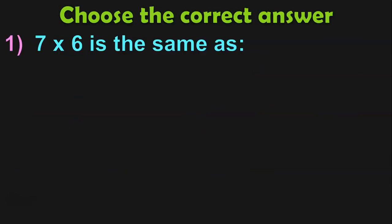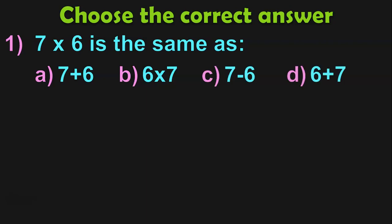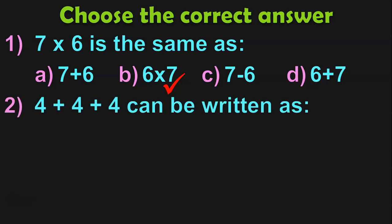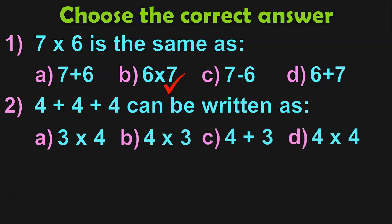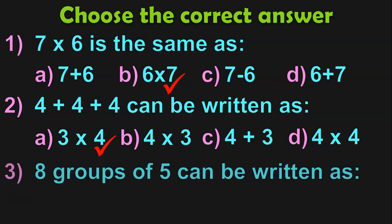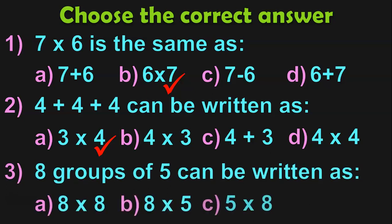Next, choose the correct answer. 7 into 6 is the same as: 7 plus 6, 6 into 7, 7 minus 6, or 6 plus 7. By the order property of multiplication, 7 into 6 is the same as 6 into 7. Next, 4 plus 4 plus 4 can be written as: 3 times 4, 4 times 3, 4 plus 3, or 4 into 4. The correct answer is 3 times 4 — because 4 is added 3 times. 8 groups of 5 can be written as 8 into 5.